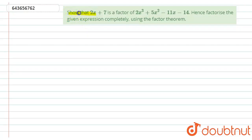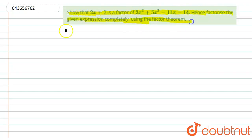We have been given: show that 2x plus 7 is a factor of 2x cubed plus 5x squared minus 11x minus 14. Hence, factorize the given expression completely using the factor theorem.